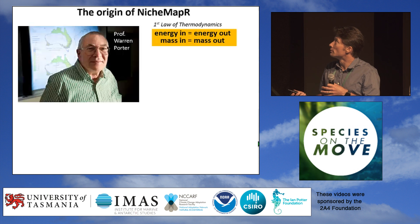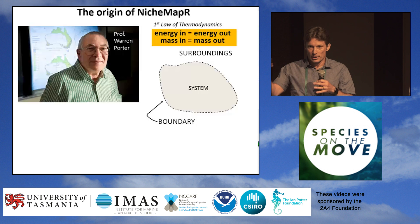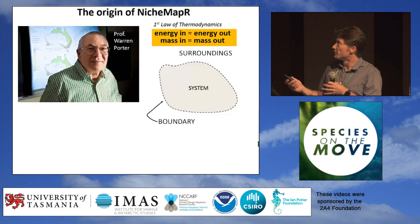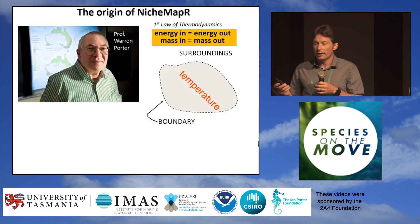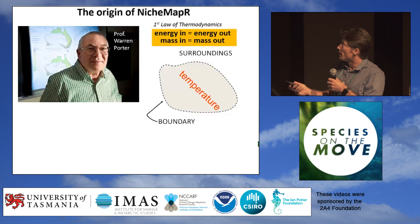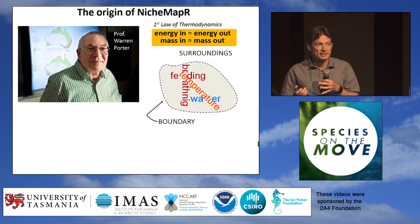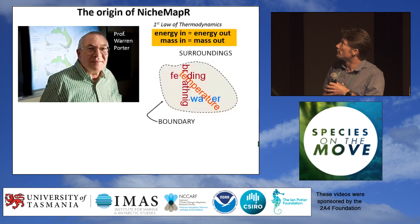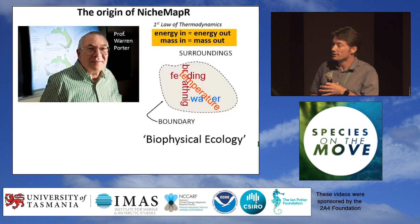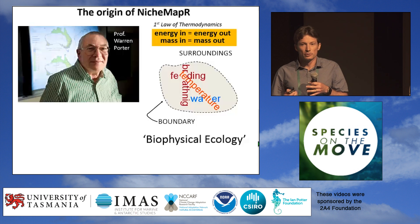In thermodynamics, you define a system boundary around some part of the universe and follow the flows of energy and matter in and out of that boundary. For an organism, the natural boundary is around the individual. We're trying to solve this eco-physiological problem of how the organism exchanges heat, water, gases, and food as it goes through its life cycle, and what combinations of environments enable it to survive. This general approach is called biophysical ecology.